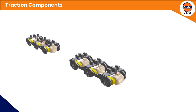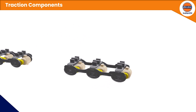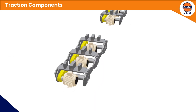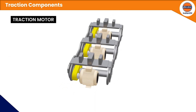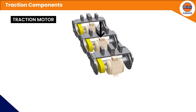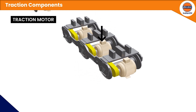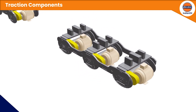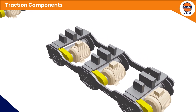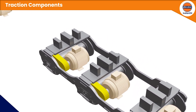The traction motor is a three-phase AC motor with high reliability and higher energy efficiency. In braking mode, the three-phase motor acts as a generator and power is fed back to the DC link via the two inverters.